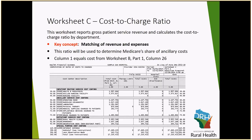Worksheet C Part 1 of the Medicare Cost Report is where we report our gross patient service revenue and calculate the cost-to-charge ratios by department for the organization. The key concept when reviewing and preparing Worksheet C is to match our revenues and our expenses. The first five columns of Worksheet C Part 1 relate to costs, which are directly pulled over from Worksheet B Part 1, Column 26, and reflect all the costs by the specific cost centers.